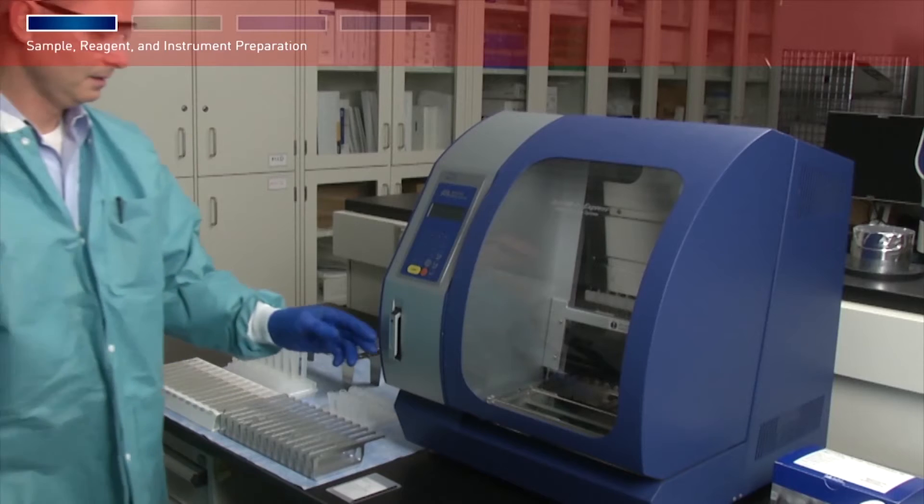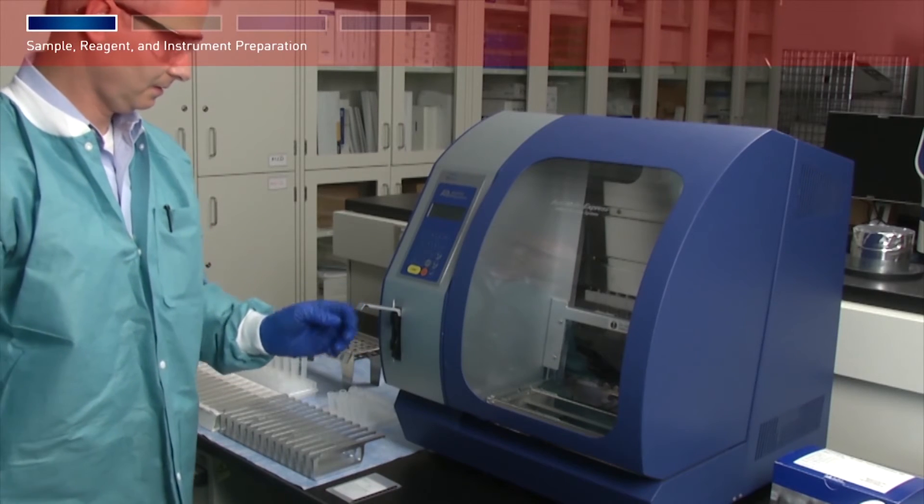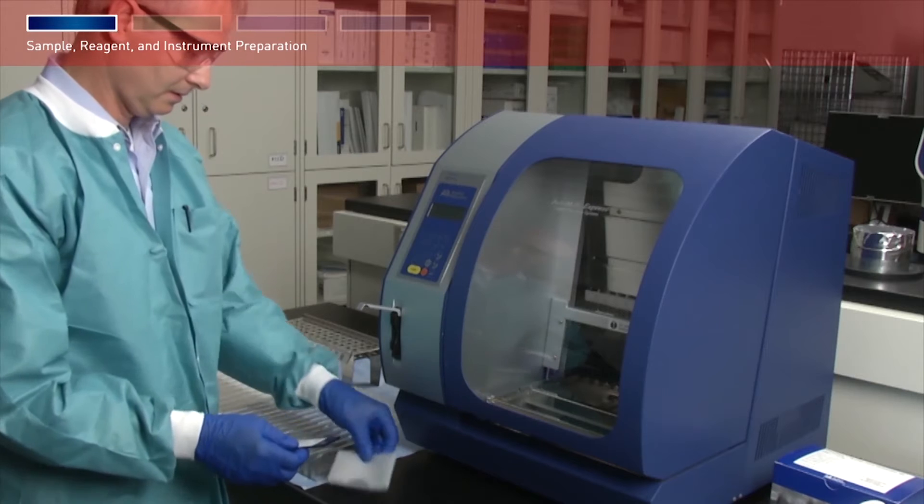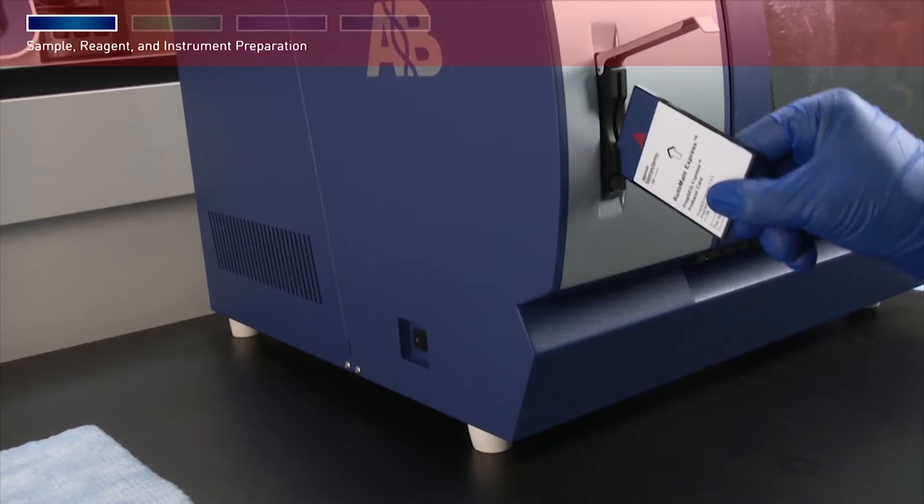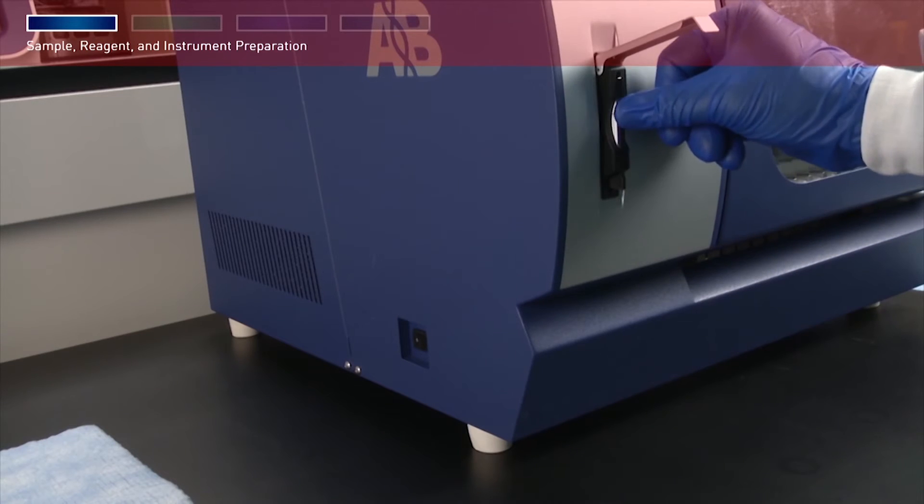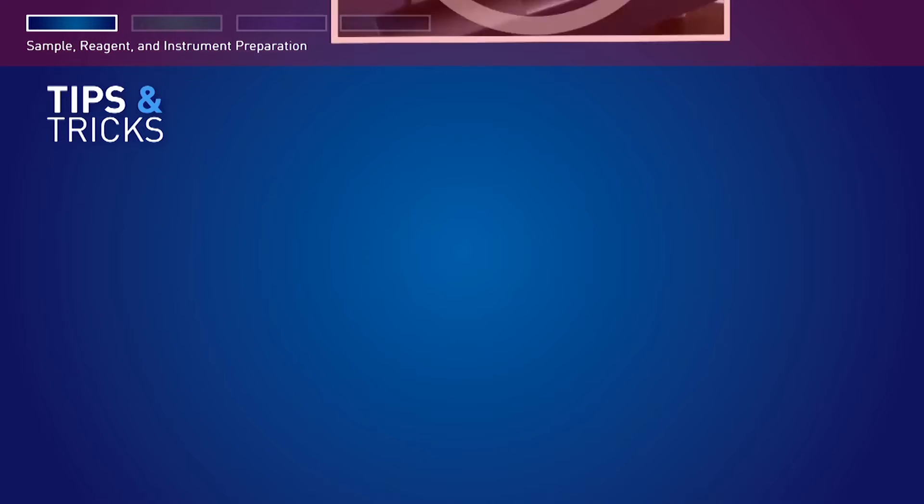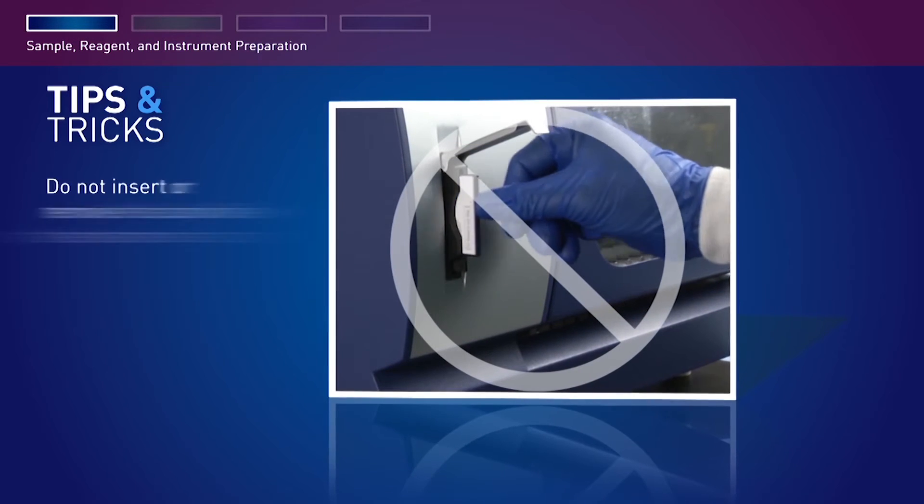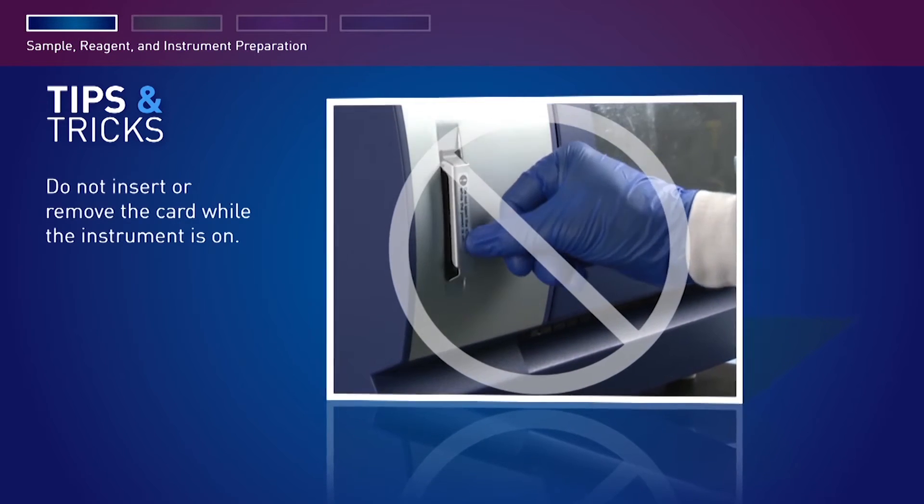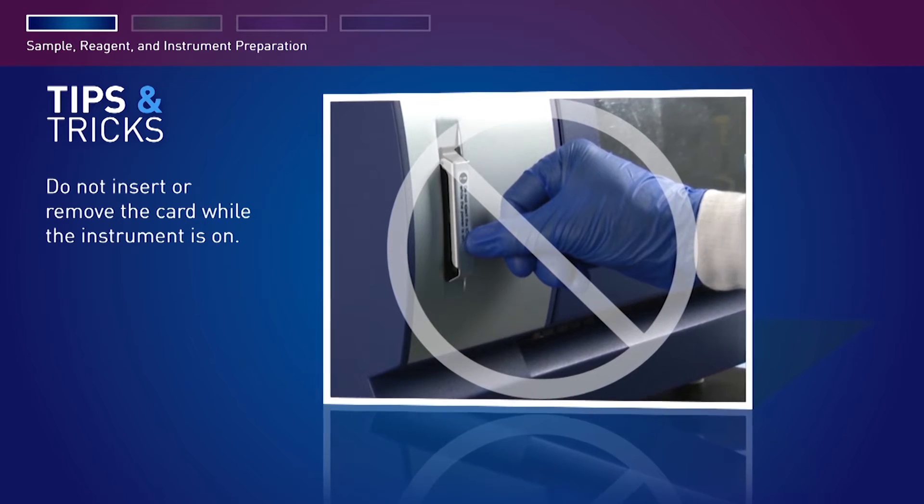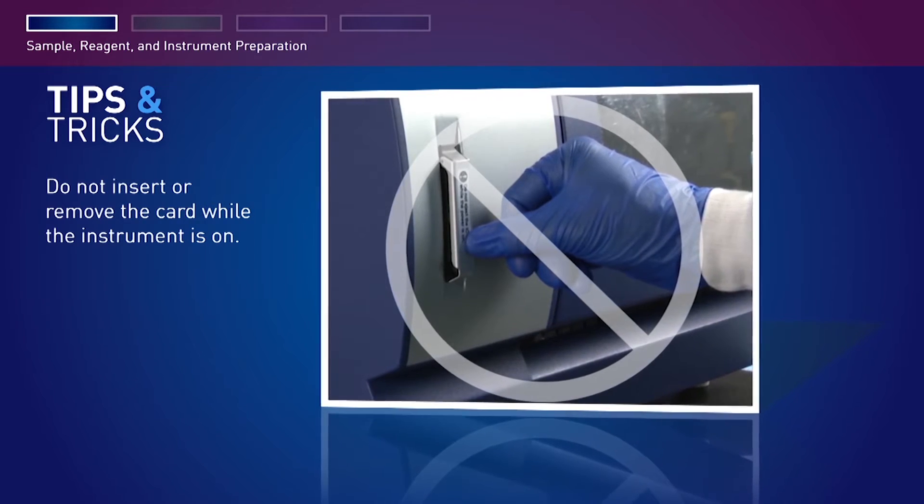Open the card slot and insert the PrepSeek Express kit protocol card in the slot with the arrow pointing toward the instrument and the card label facing left, then close the card slot. Do not remove or insert the protocol card while the instrument is on. Removing the card stops the run and may cause instrument data file loss.